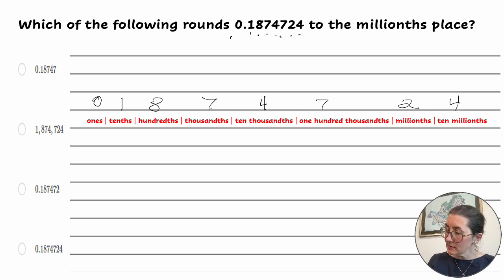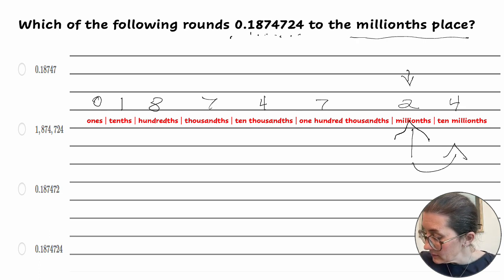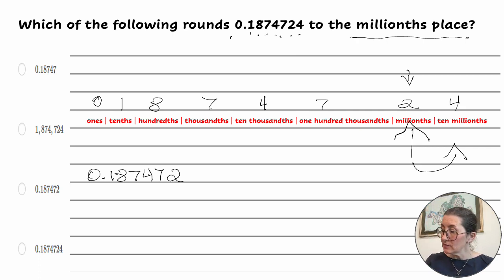Now again, we are asked to round to the millionths place. And this is the millionths place. So we have to look to the number to the right, which is 4. And we ask, is it 5 or greater? And the answer is no. So the 2 stays as a 2. It doesn't need to be rounded up. And the number becomes 0.187472. That is this number rounded to the millionths place.